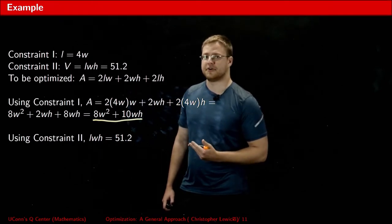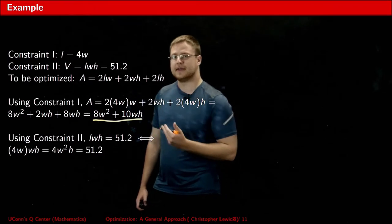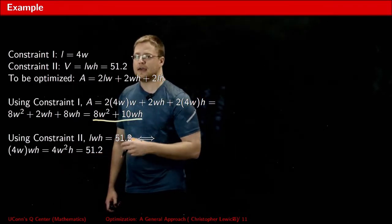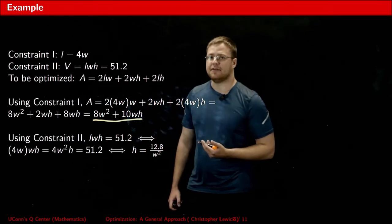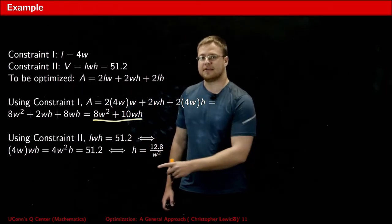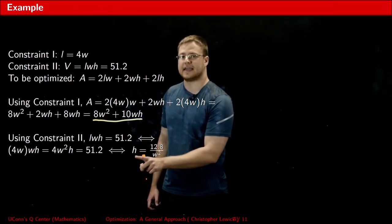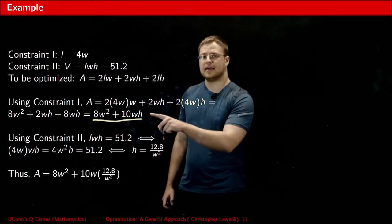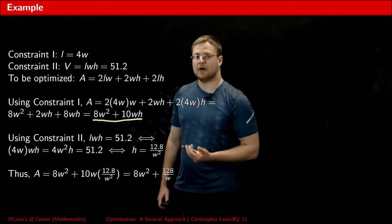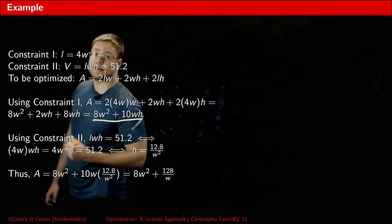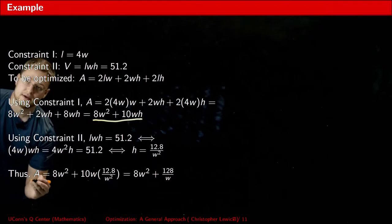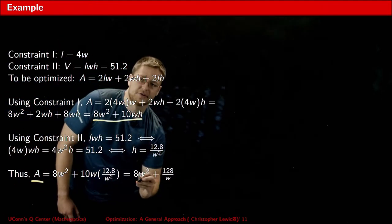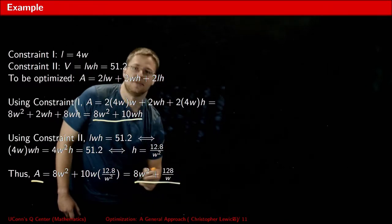What we could do is substitute constraint number one into constraint number two so that we get this. I can now divide both sides by 4W squared to now have an expression for the height, H, in terms of W. If I substitute this now into this expression, what I end up with is exactly what I wanted, an equation for our surface area that's in terms of only one variable, the width.